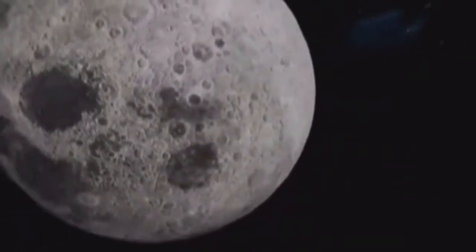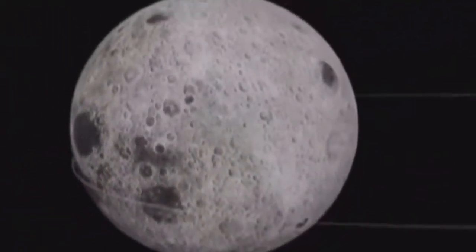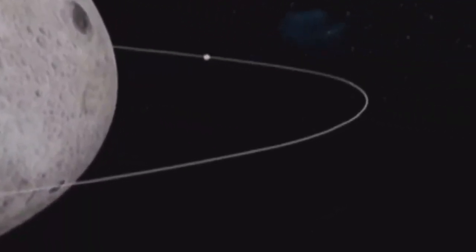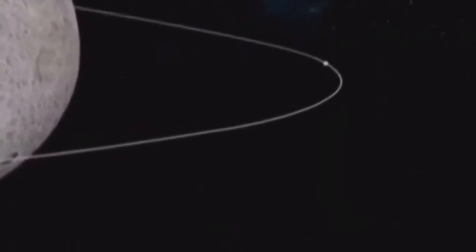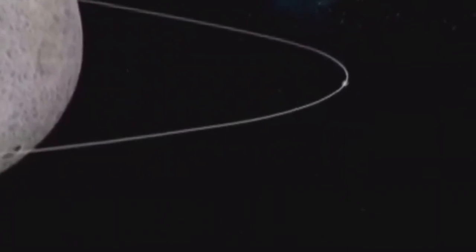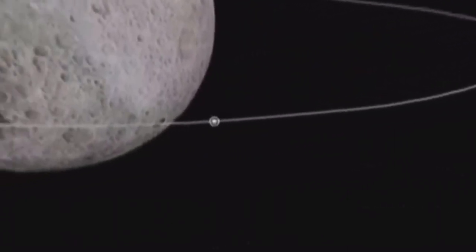For Artemis 1, Orion will pass by the moon just 60 nautical miles from its surface and enter a distant retrograde orbit. Distant because the farthest end of the orbit is 38,000 nautical miles away from the surface of the moon.